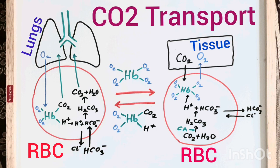The hemoglobin molecule, now carrying four oxygen molecules under normal circumstances, will go to the tissues through the arterial circulation to release some oxygen and take up some carbon dioxide at the cellular level. This is all about carbon dioxide transport.